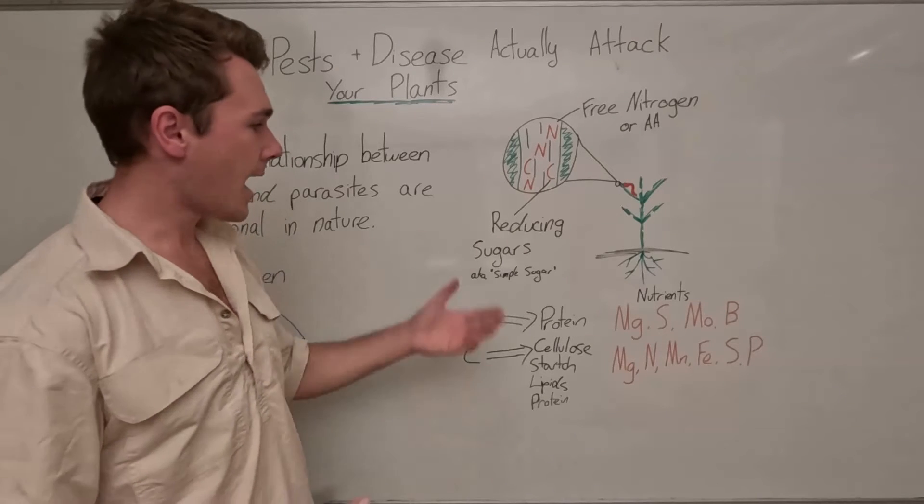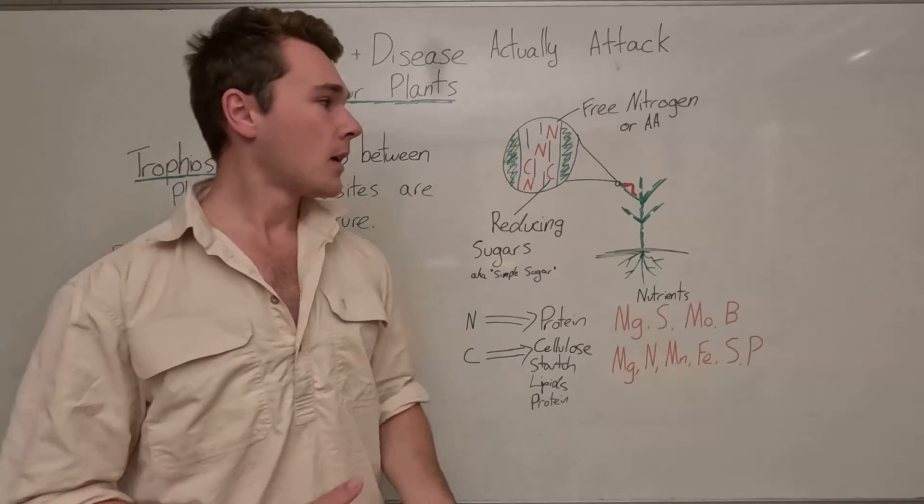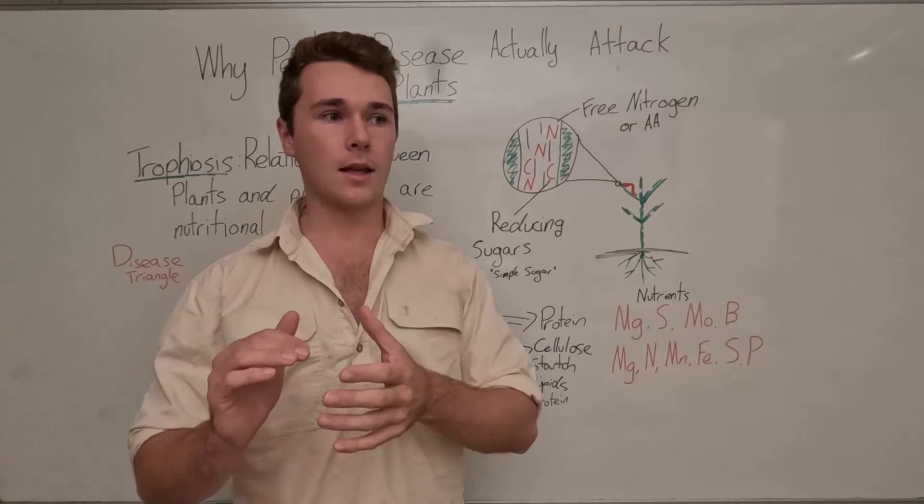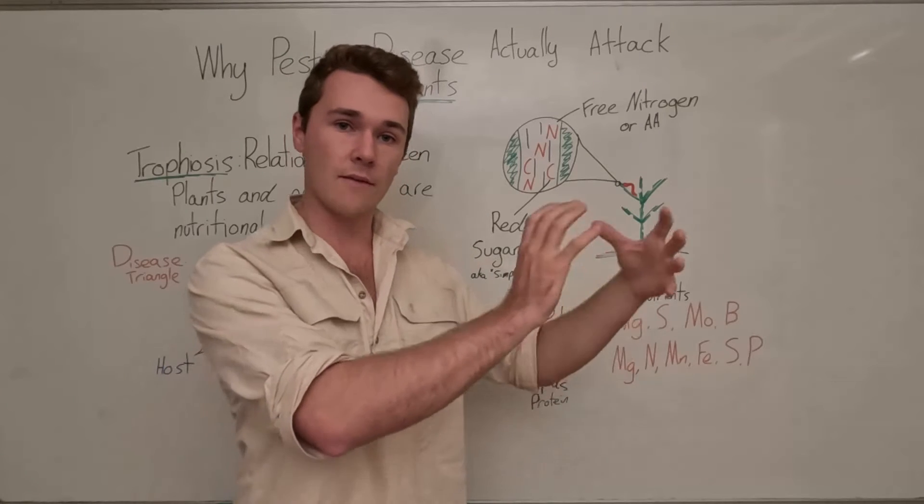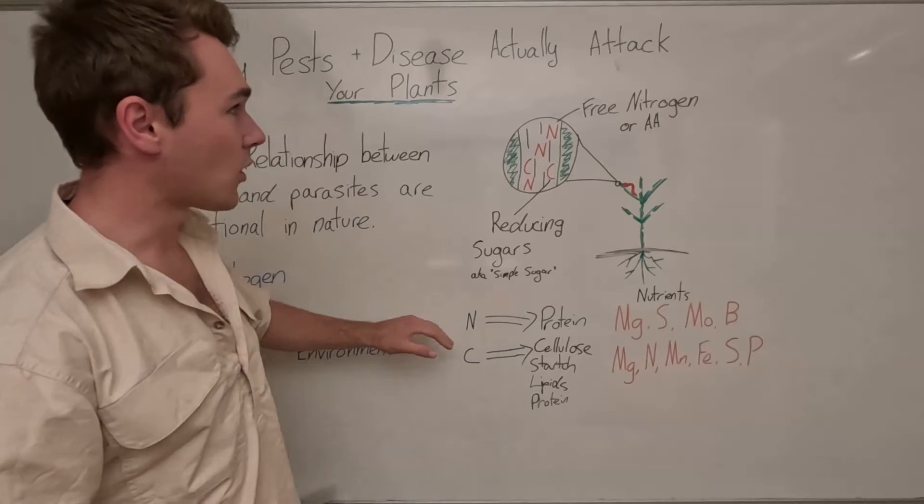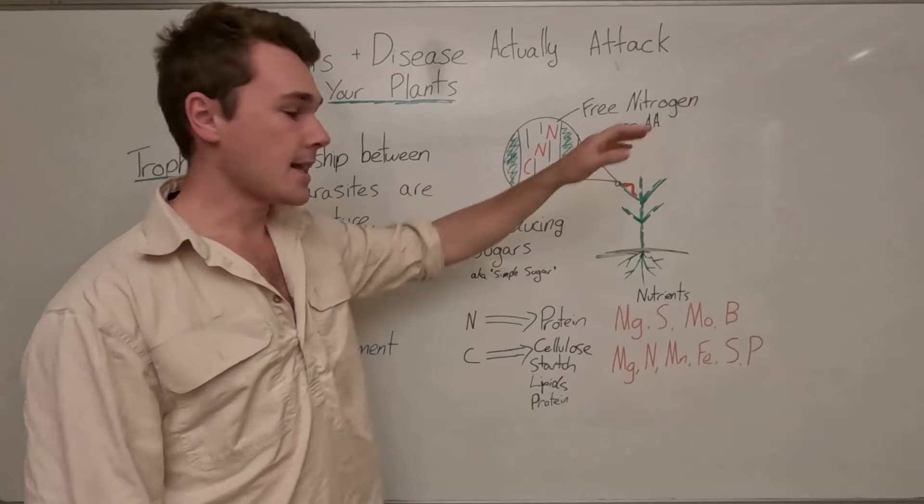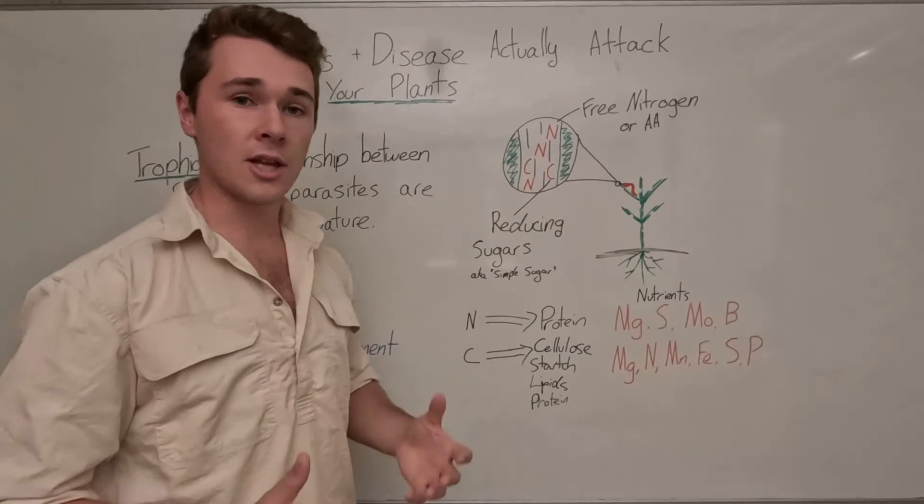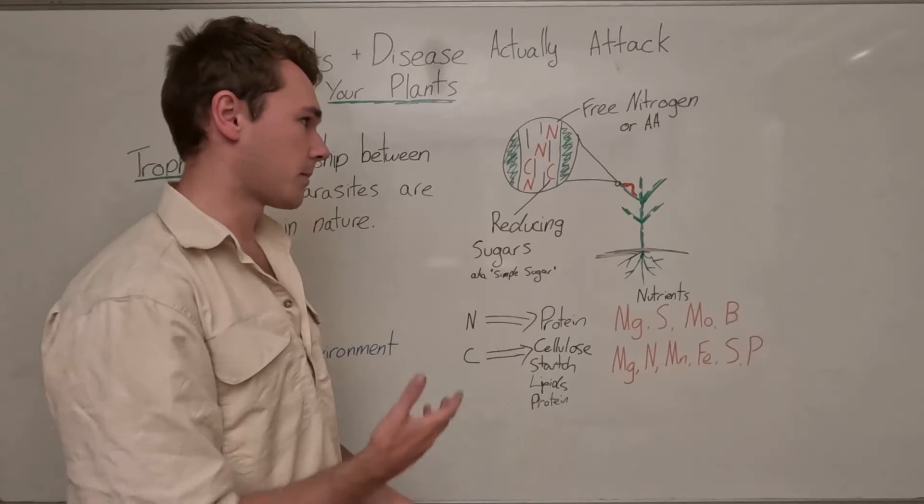And so because of the simple digestion system of our pests, they can actually consume our plant looking for these free nitrogens and reducing sugars. Now it's important that our plant has reducing sugars and nitrogen. Otherwise it's going to become deficient in those and it can't grow and develop. But what Francis explores in his literature is that if we maximize the conversion process of these free nitrogens and reducing sugars into their final product, which is protein for nitrogen. So nitrogen needs to be converted, or say if you have nitrate, that needs first be converted into amino acids and then into proteins. If we have a really good protein synthesis process in our plant, there's a good chance that that plant will become an unsuitable host for our disease and pests.